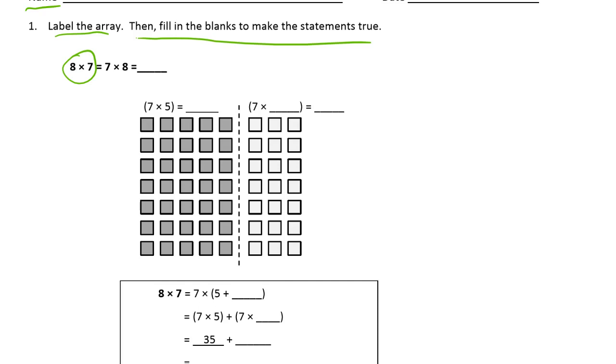So 8 7s is the same as 7 8s. That's what this says up here. And the whole thing is going to equal, we'll find out. So if we're looking at 7 8s, then we could be looking at 7 5s and 7 3s. Because this whole thing is 1, 2, 3, 4, 5, 6, 7 rows of 8.